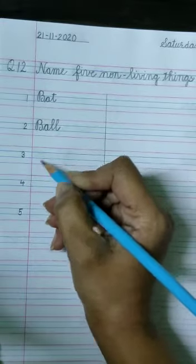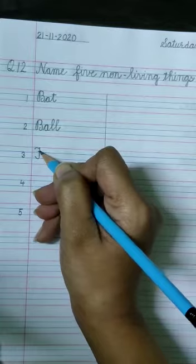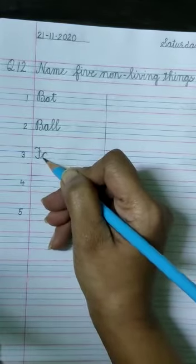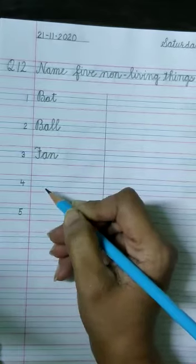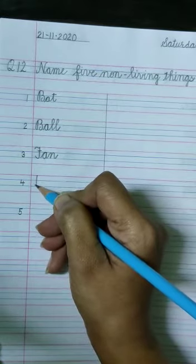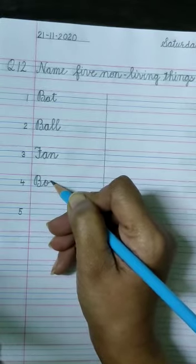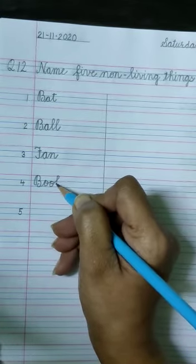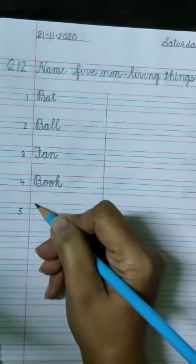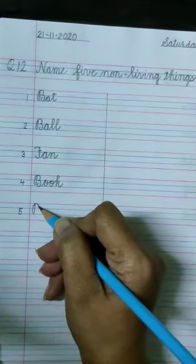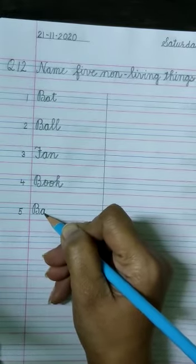Number 3: fan, and the spelling of fan is F-A-N. Number 4: book, and the spelling is B-O-O-K. Number 5: bag, and the spelling is B-A-G.